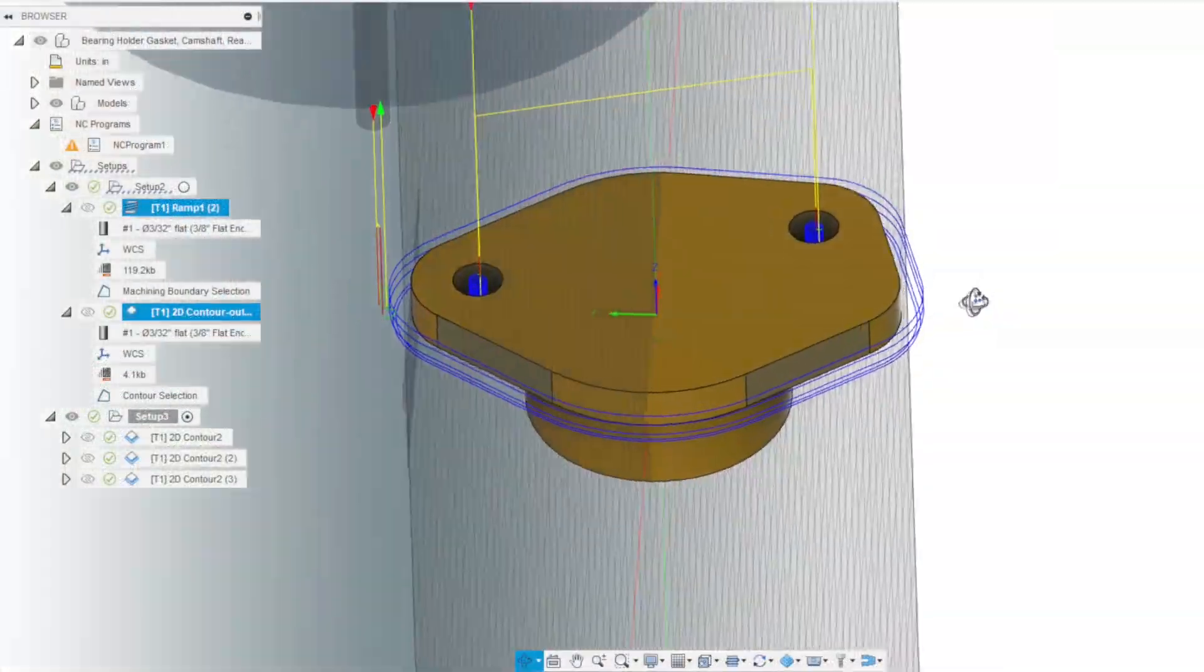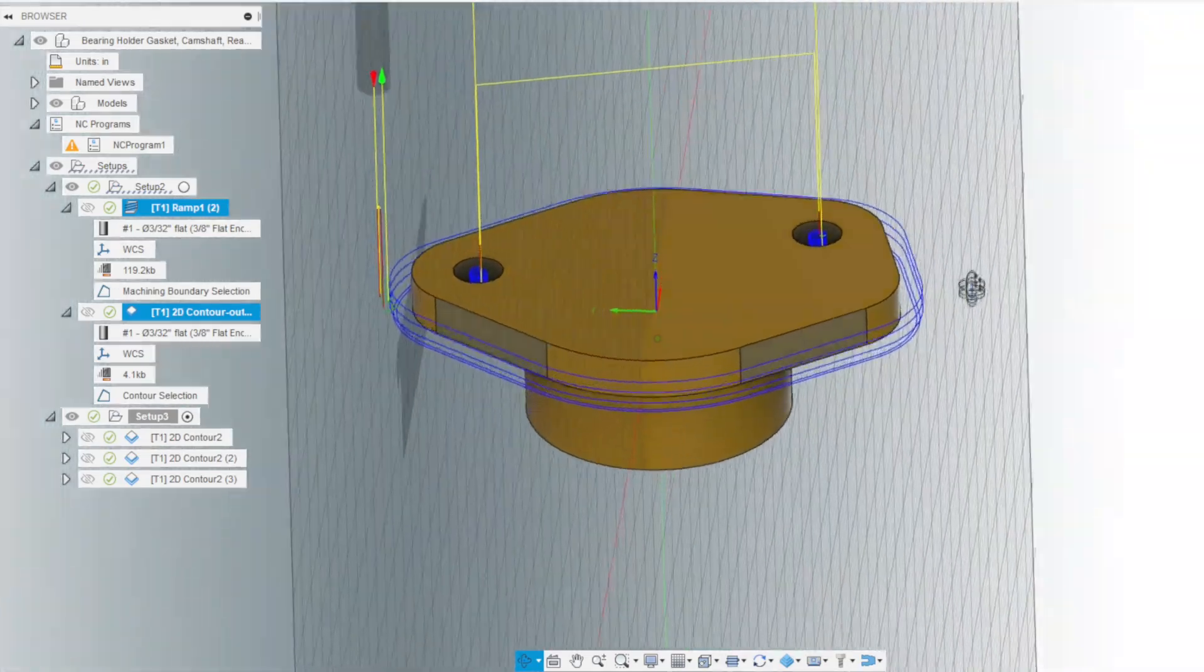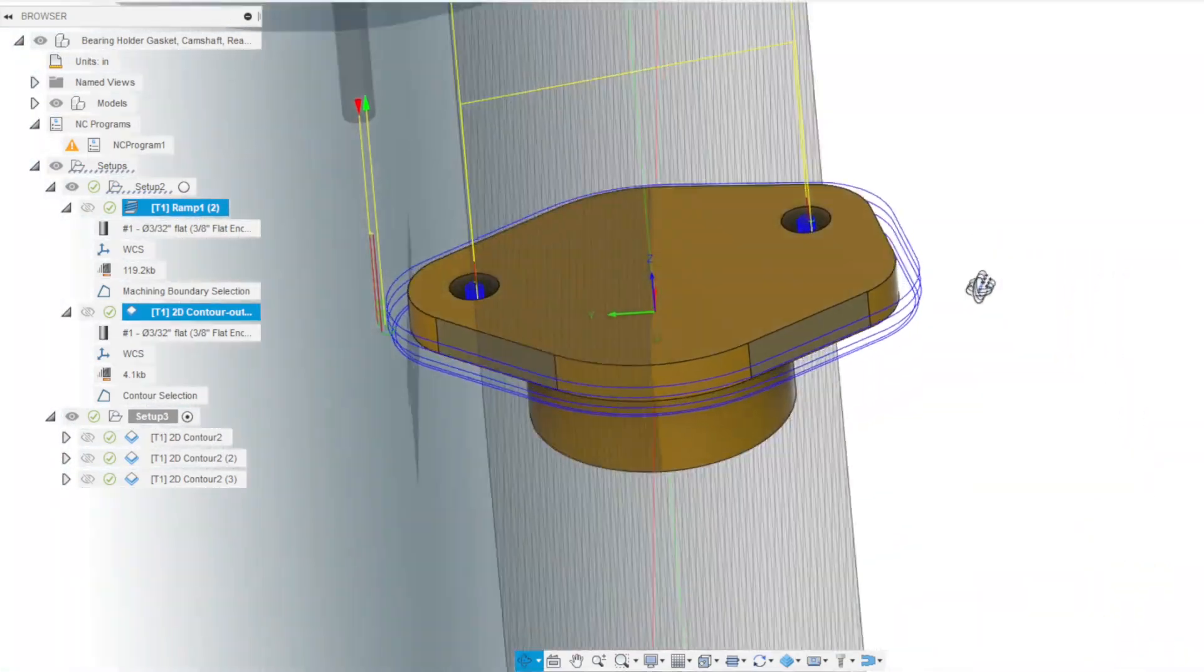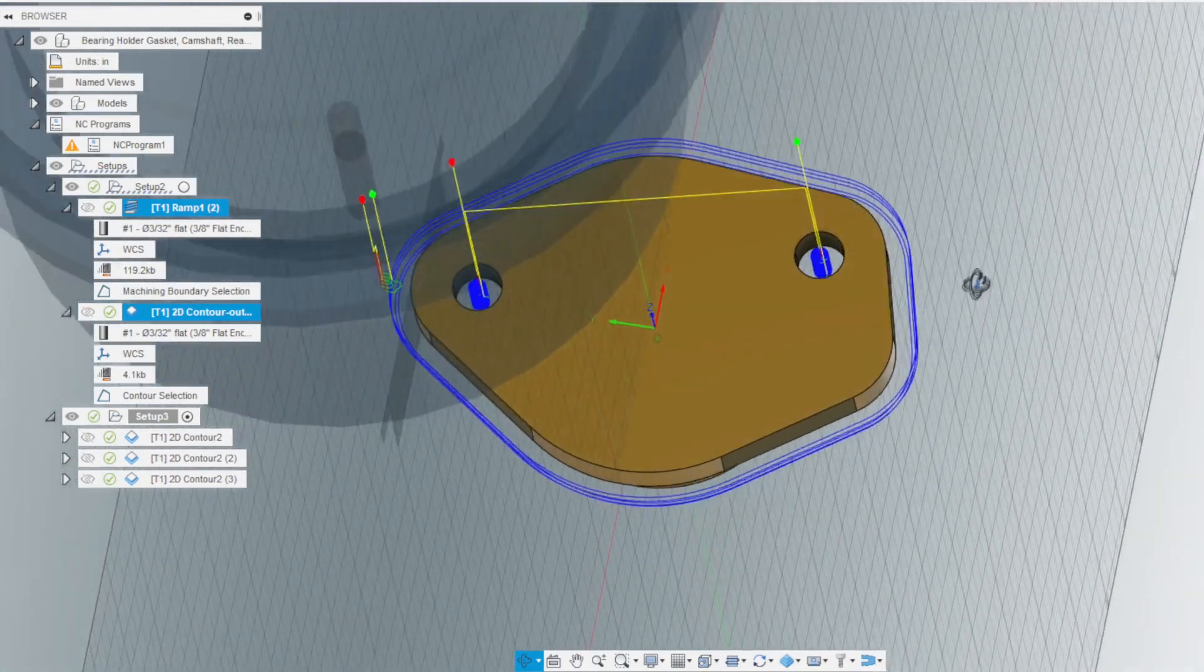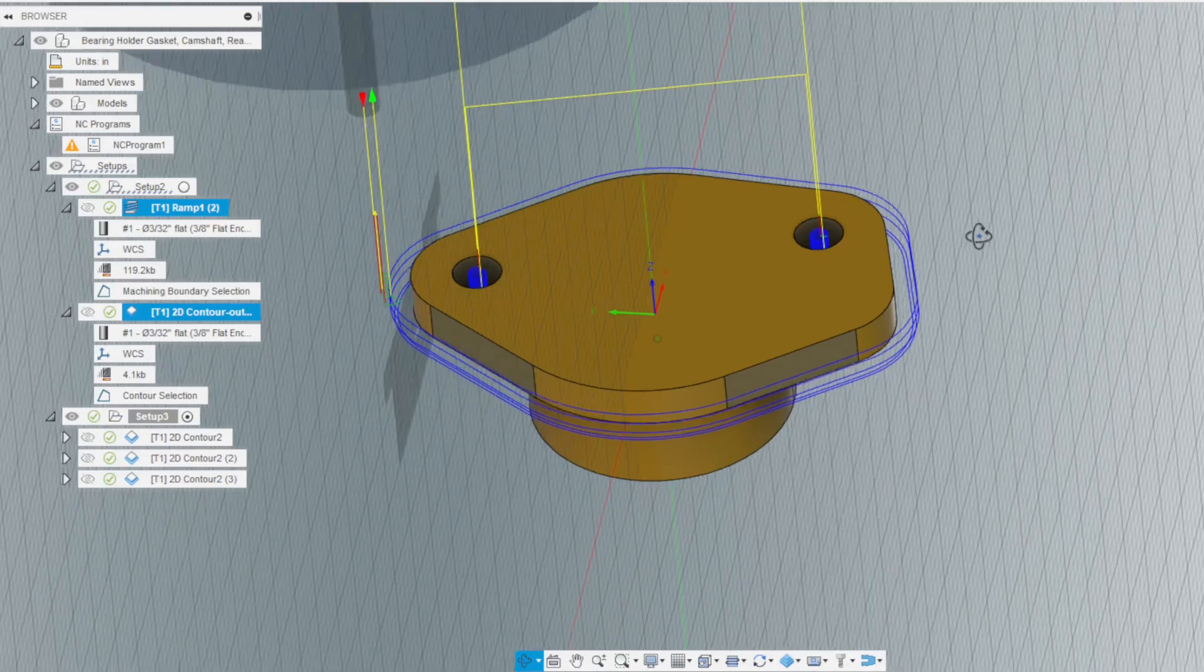We already have the rear camshaft bearing holder in Fusion 360. We used our CNC machine to machine this outline and these two holes. I've found the simplest way to make gaskets is to use this existing model. I used to create DXF files, export the DXF files, and then use a trace operation in Fusion 360 to create the tool paths. But I found there was a lot of extra steps.